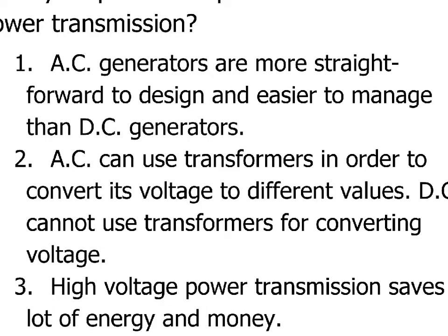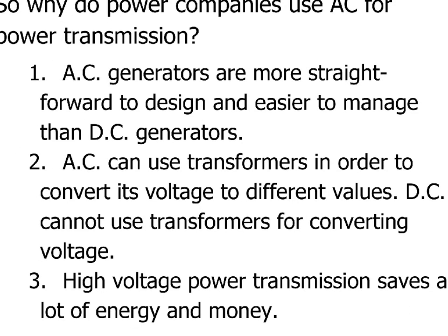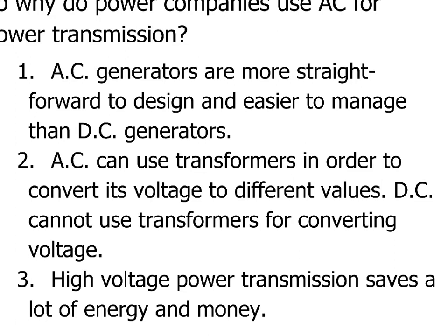Secondly, and possibly most importantly, alternating current allows the use of transformers. Transformers require alternating current — they do not work with direct current. So you have to have alternating current if you're going to use transformers. Transformers are used extensively in the power transmission system: there's a step-up transformer before you send the power, and a step-down transformer when it gets to where it's going. With direct current, you can't use transformers, meaning you couldn't transform the voltage at all.